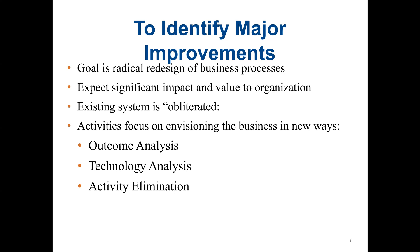The group systematically identifies how each technology can be applied to business processes and how the business will benefit from the technology. The next method is activity elimination — exactly what it sounds like. The analysts and managers work together to identify how the organization can eliminate each activity in the business process, how the function could operate without it, and what effects are likely to occur. Initially, managers may be reluctant to conclude that processes can be eliminated, but this is a force-fit exercise in that they must eliminate each activity.